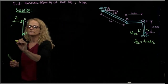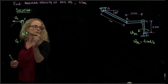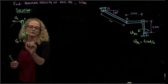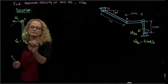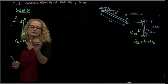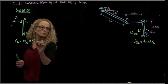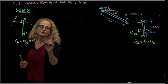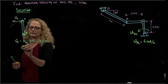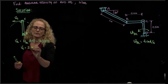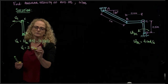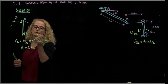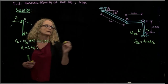The velocity of C equals the angular velocity of DC times the distance, which is 0.5 times 4, giving a velocity of C equal to 2 meters per second in that direction. In vector form, this will be in the negative I direction.